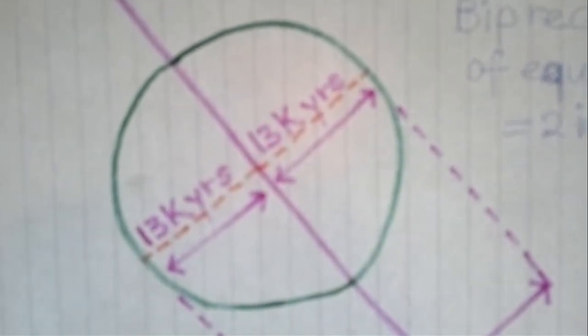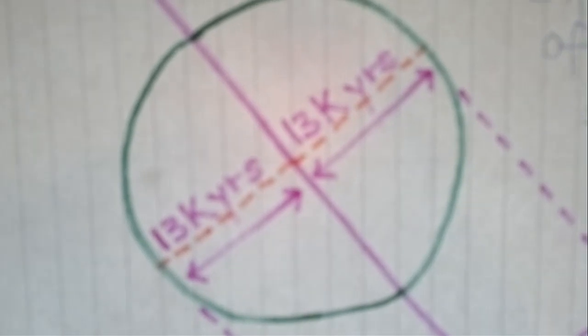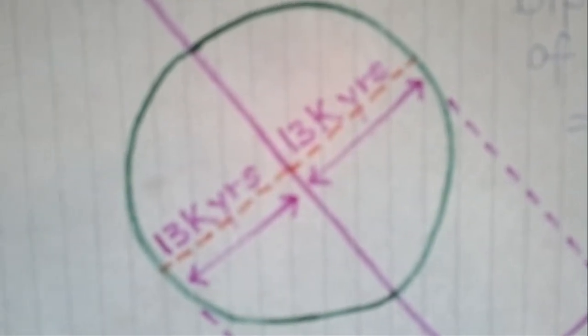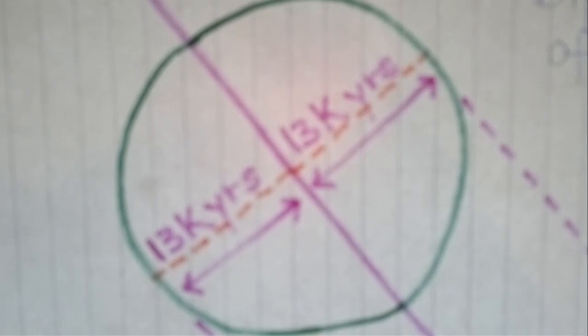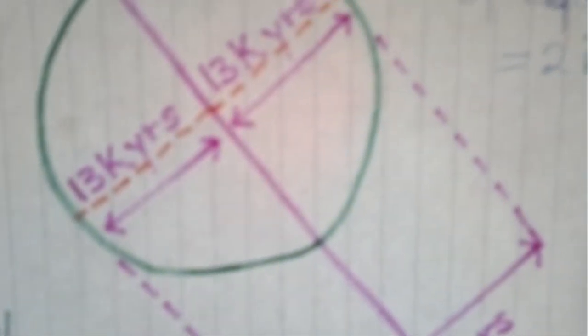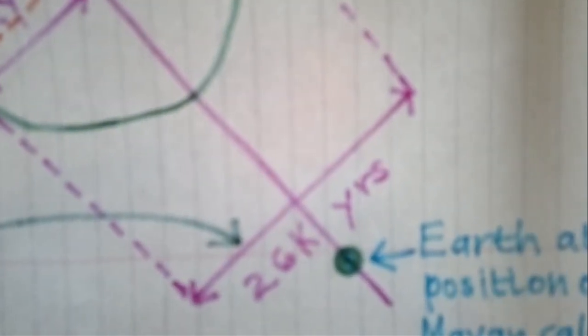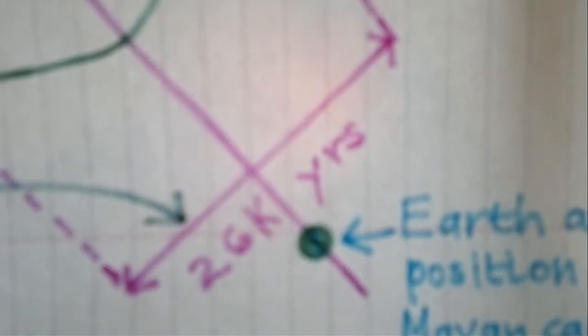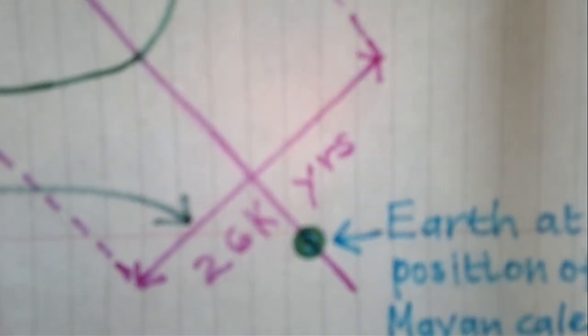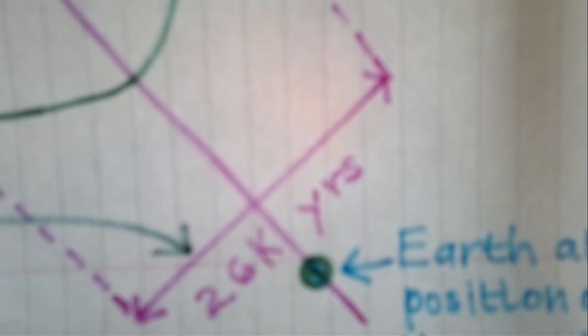Scientists apparently say that ice ages are 13,000 years long and I think we're supposed to have 13,000 years between each one. So when I heard that the precession of the equinoxes takes 26,000 years, I thought, well, that's very interesting because that's exactly two ice ages.